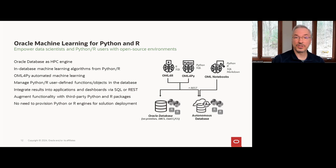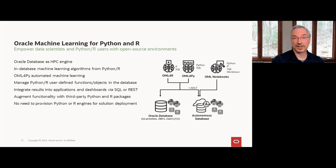With OML for Python and R, Oracle Machine Learning empowers users with open-source environments, leveraging the database as a high-performance computing environment. Database tables and views are accessed through DataFrame proxy objects with overloaded functionality that produces SQL transparently behind the scenes. The in-database machine learning algorithms are exposed through native Python and R APIs, producing the same first-class in-database models as through the SQL API. OML for Python also introduces support for automated machine learning, which we'll discuss more in a moment.